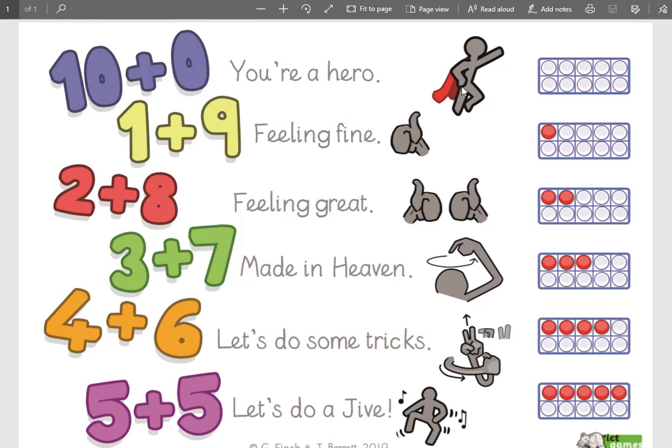Here we go. I'm going to say it together. 10 and 0, you're a hero. 1 and 9, feeling fine. One thumb up. 2 and 8, feeling great. 2 thumbs up. Then do a little spirally thing over here, like a halo. 3 and 7, made in heaven. 4 and 6, let's do some tricks. You've got to sort of swing your arm around like that and then make two fingers with your other hand, like a little rabbit popping out of a hat. It's like putting his ears up and down. 5 and 5, let's do a jive. And that one, you dance and shake your booty.